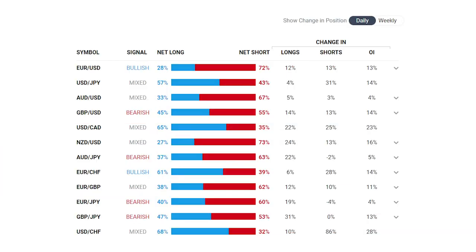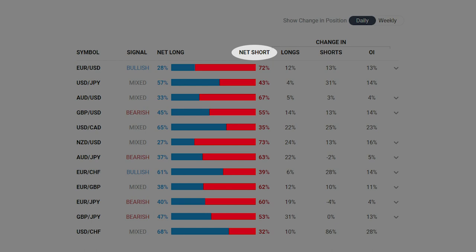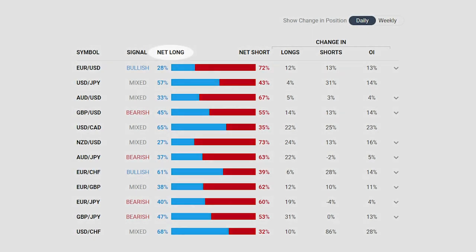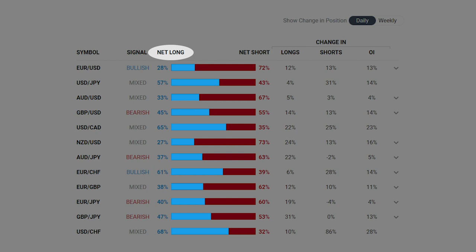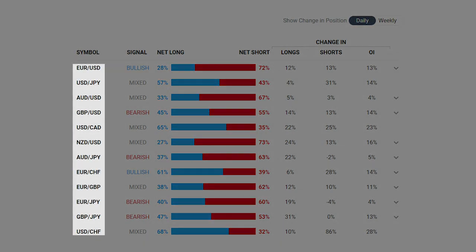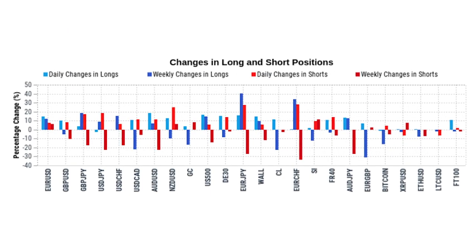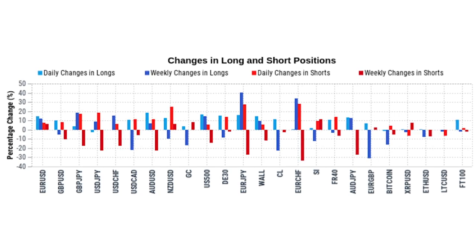Here, you will find IG client sentiment displayed for popular markets in a visually pleasing layout, making it easy to get an overall idea of where the majority of clients are positioned. The red portion of the horizontal bar indicates the number of short traders, and the blue portion of the same bar displays the number of long traders alongside their relative percentage figures. This is presented for each market, while also providing daily or weekly changes in longs, shorts, and open interest to support your analysis.